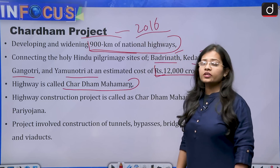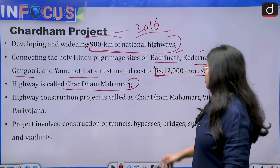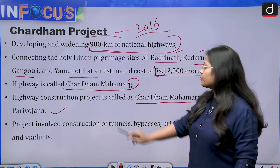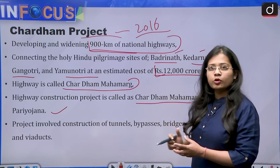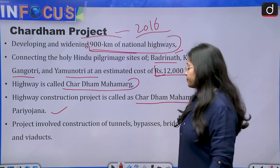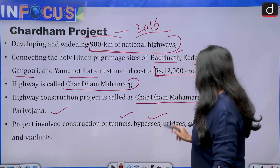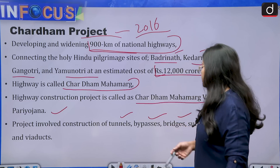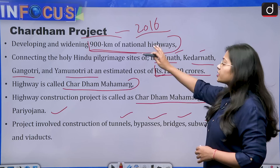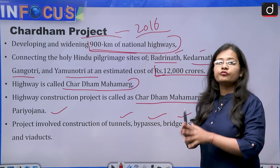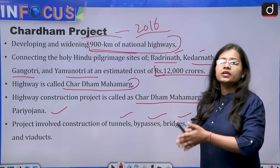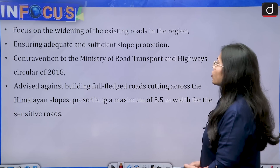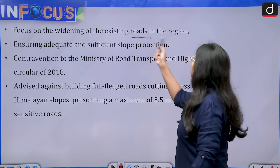The complete highway construction project is called the Char Dham Maha Marg Vikas Pariyojana. The project involved construction of tunnels, bypasses, bridges, and subways, along with roads. The Char Dham Project mainly looked at building infrastructure so that people can easily reach the holy pilgrimage sites.